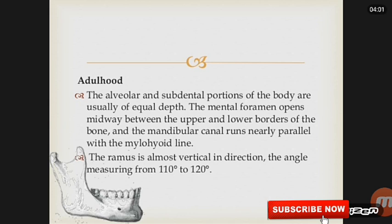In adulthood, the alveolar and subdental portions of the body are usually of equal depth. The mental foramen opens midway between the upper and lower borders of the bone, and the mandibular canal runs nearly parallel with the mylohyoid line. The ramus is vertical. The angle reduces to about 110 to 120 degrees.